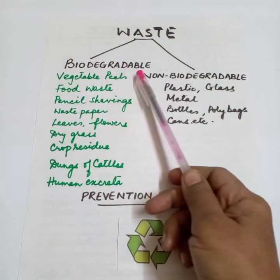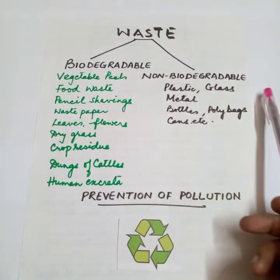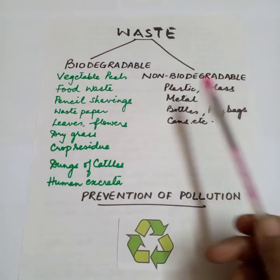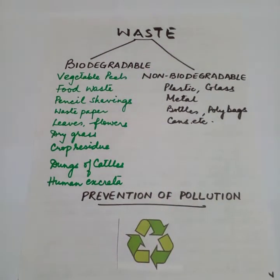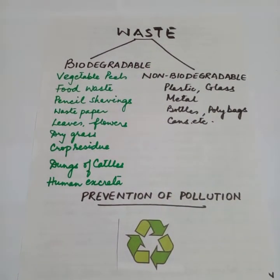There are two types of waste: biodegradable and non-biodegradable. Biodegradable waste includes vegetable food waste, pencil shavings, waste paper, leaves, flowers, dry grass, and crop residue.